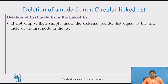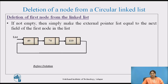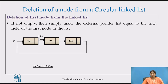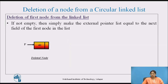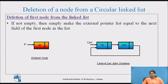If the linked list is not empty, then we simply make the external pointer list equal to the next field of the first node. Here is a circular linked list where we want to delete the first node. We assign a temporary pointer p. To delete the first node, we assign list to the next of list, moving the list pointer from the first node to the second node. Then we traverse to the last node and assign its next part to list. After this, the first node is deleted, pointed by p. The deleted node has value 40.